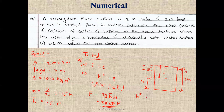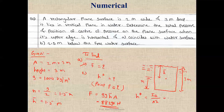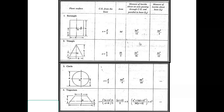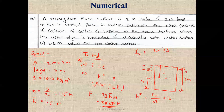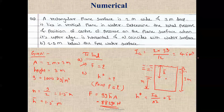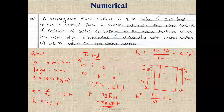To find the center of pressure, h* = Ig/(A·h̄) + h̄. For a rectangle, Ig = bd³/12 = (2 × 3³)/12 = 4.5 m⁴. Substituting: h* = 4.5/(6 × 1.5) + 1.5 = 2 meters. So the center of pressure for Case 1 is at 2 meters from the free surface.